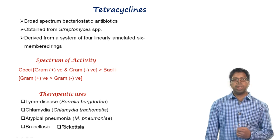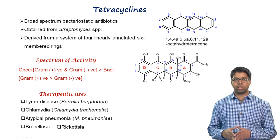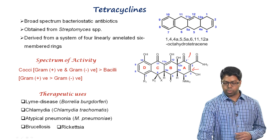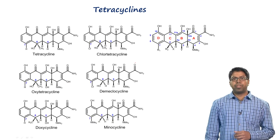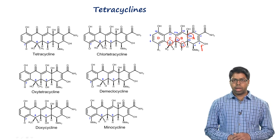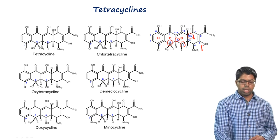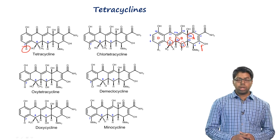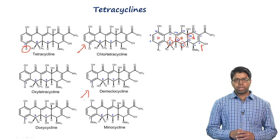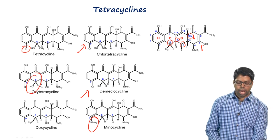Tetracyclines contain a nucleus derived from octahydrotetracene consisting of four fused six-membered rings labeled A, B, C, and D, numbered 1 to 12. Carbon atoms 4, 4A, 5, 5A, 6, and 12A are potentially chiral. Minor changes in substituents yield different compounds: replacing hydrogen at position 7 with chlorine gives chlorotetracycline and demeclocycline; adding a dimethylamino group gives minocycline. Oxytetracycline has a hydroxyl group at position 6, which is absent in doxycycline.